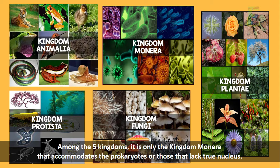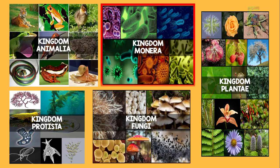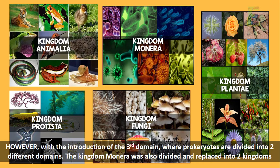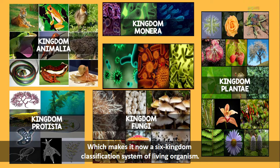Among the five kingdoms, it is only kingdom Monera that accommodates the prokaryotes, or those that lack a true nucleus, and the rest of the four kingdoms cater to eukaryotic organisms, or those with a true nucleus. However, with the introduction of the third domain, where prokaryotes are divided into two different domains, kingdom Monera was also divided and replaced into two kingdoms, making it now a six-kingdom classification system.